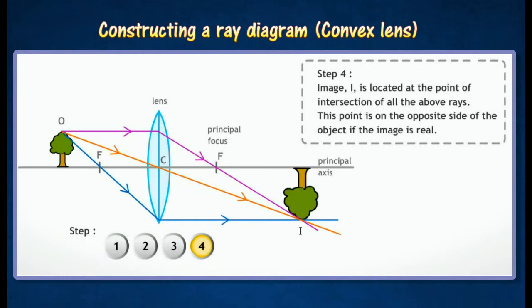Image is located at the point of intersection of all the above rays. This point is on the opposite side of the object if the image is real.